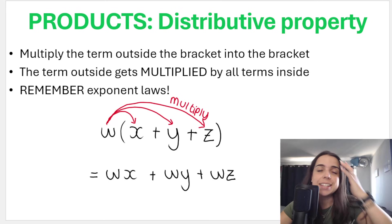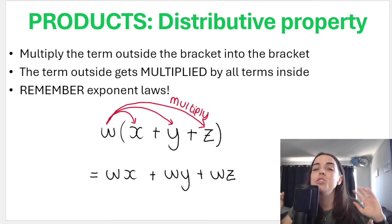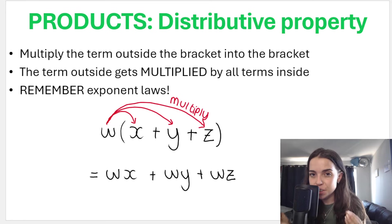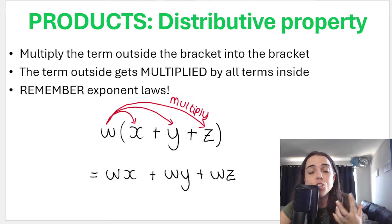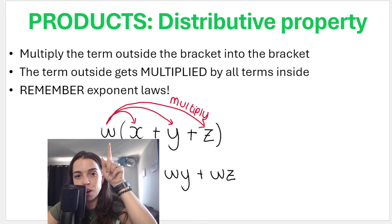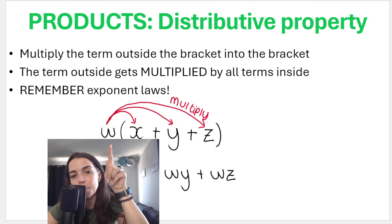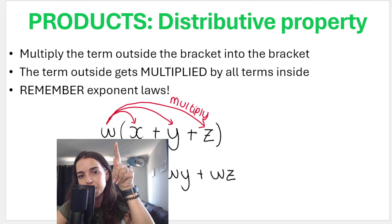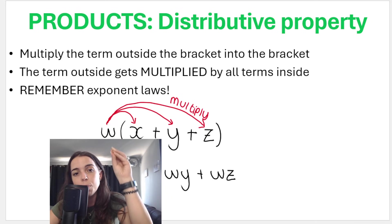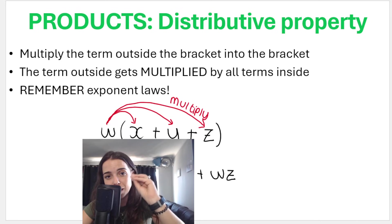When doing products and simplifying algebraic expressions, the distributive property is essential. How the distributive property works is we multiply the thing that is right outside the bracket — the thing that is squashed up against the bracket with no sign separating it — and we multiply that into the bracket.